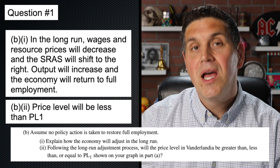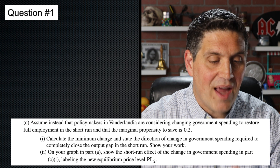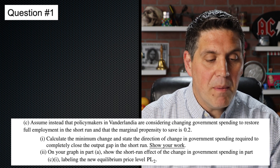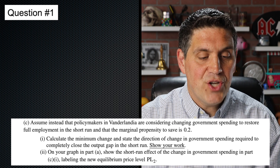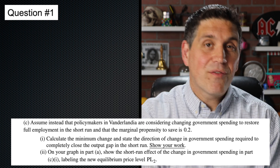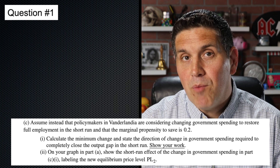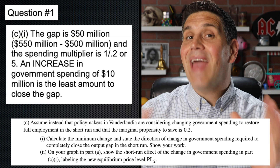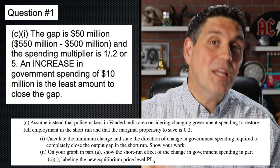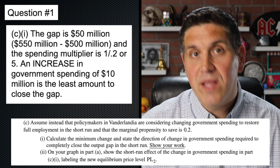So the new price level will be less because the aggregate supply is going to shift to the right. In C, it asks you about the multiplier effect and you actually do some calculations. It says calculate the minimum change and the direction of the change in spending that would close this $50 million gap. It also gave you the marginal propensity to save, which is 0.2. So the spending multiplier is 5. If the gap is $50 million and the multiplier is 5, then an increase of $10 million in government spending would close the gap.